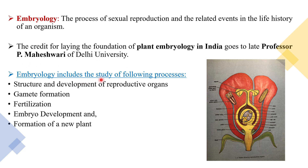Embryology includes the study of the following processes: first, structure and development of reproductive organs; second, gamete formation; third, fertilization; fourth, embryo development; and fifth, the formation of a new plant. We will see how all these processes take place.